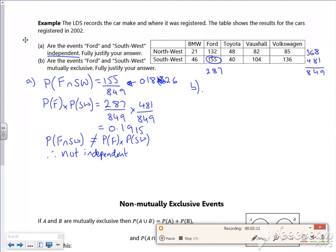Part B. So I want Ford or Southwest now from the table. If I look at the table, there's 287 Ford, there's 481 Southwest, but I want to remove the 155. So I'm looking at the 287 for the Ford, the 481 for the Southwest, but remove the overlap, all over the 849.